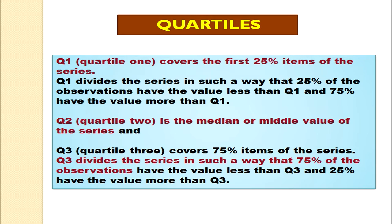Now let us talk about the second quartile, which is often known as median. So it is the median or middle value of the series. Now let us talk about the 3rd quartile. The 3rd quartile or upper quartile covers 75% of the items of the series. Q3 divides the series such that 75% of the observations have a value less than Q3 and 25% have a value more than Q3. So we have learned about Q1 — the lower quartile, Q2 — the median, and Q3 — the upper quartile.